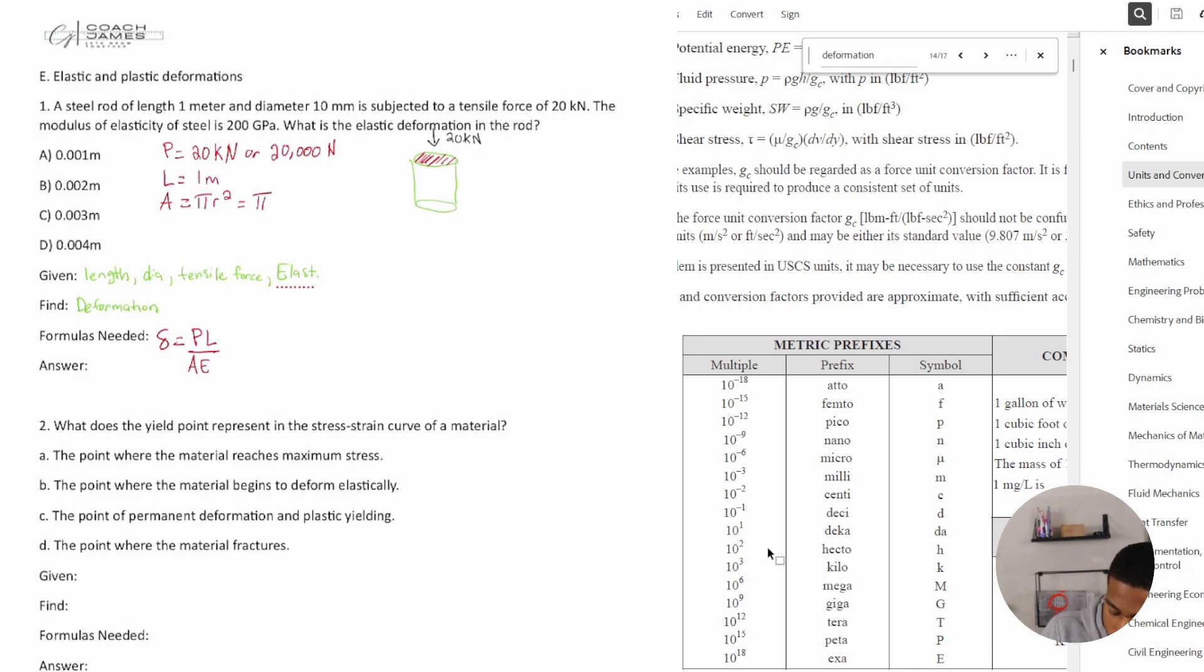Area is equal to pi r squared, which is then equal to pi. What is r? R is going to be our diameter divided by 2, which is 5 millimeters or 0.005 meters. So I just changed it from millimeters to meters. Pi r and then square. That's going to give us 7.85 times 10 to the negative 5 meters squared.